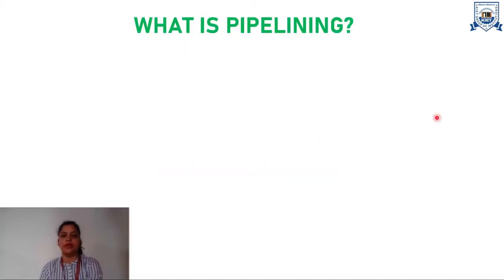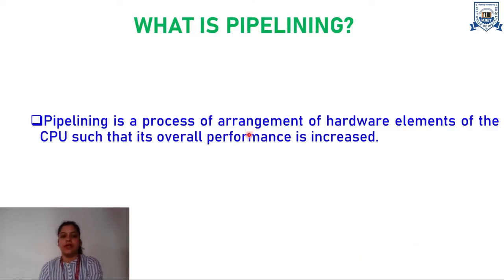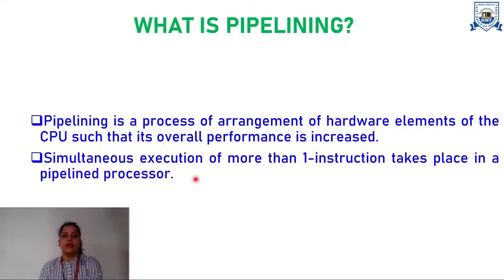Before getting started with today's video lecture, let's first try to understand what pipelining is. Pipelining is a process of arrangement of hardware elements of the CPU such that its overall performance is increased. Simultaneous execution of more than one instruction takes place in a pipelined processor.